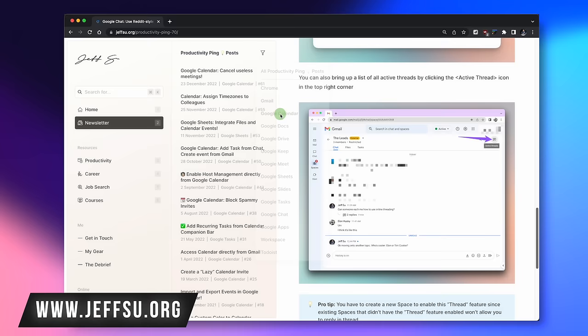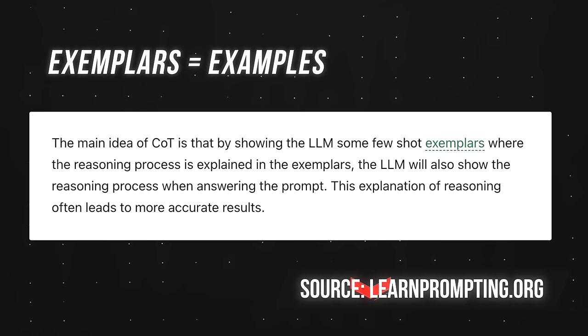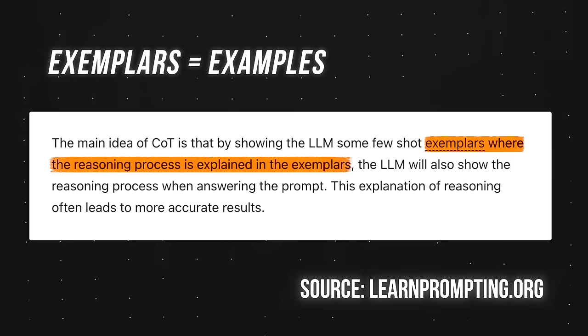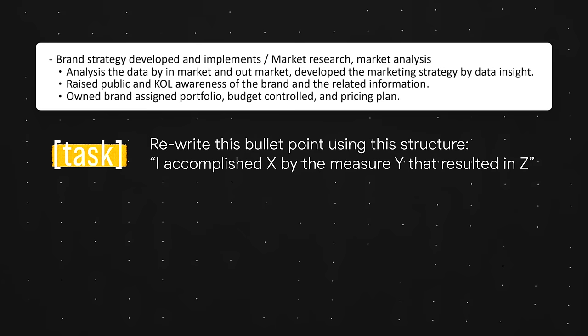Moving over to the exemplars component — it's just a fancy way of saying examples. All the research on large language models has shown that including examples within the prompt drastically improves the quality of the output. For example, this is a poorly written bullet point from a resume. We can ask ChatGPT to rewrite it using this structure: I accomplished X by the measure Y that resulted in Z — which is actually best practice, so do this in your resume.